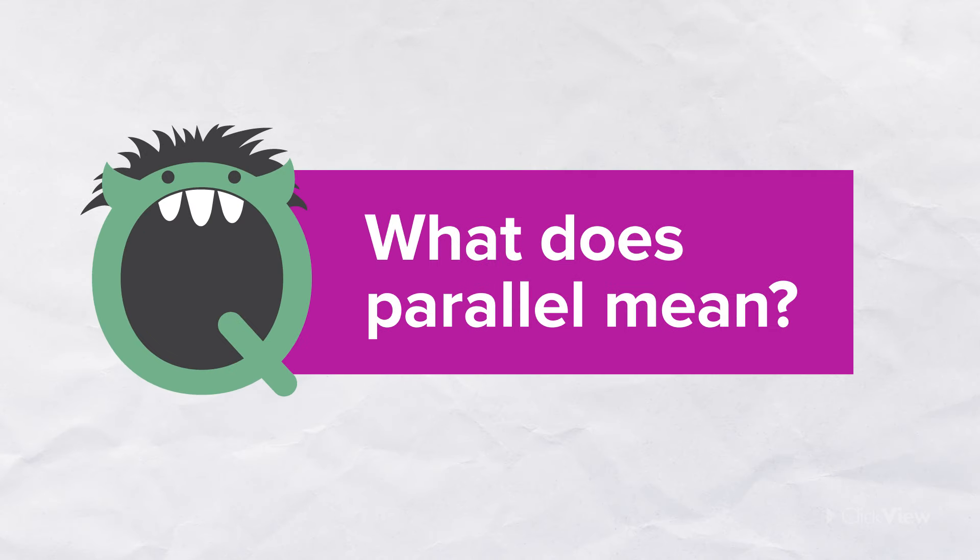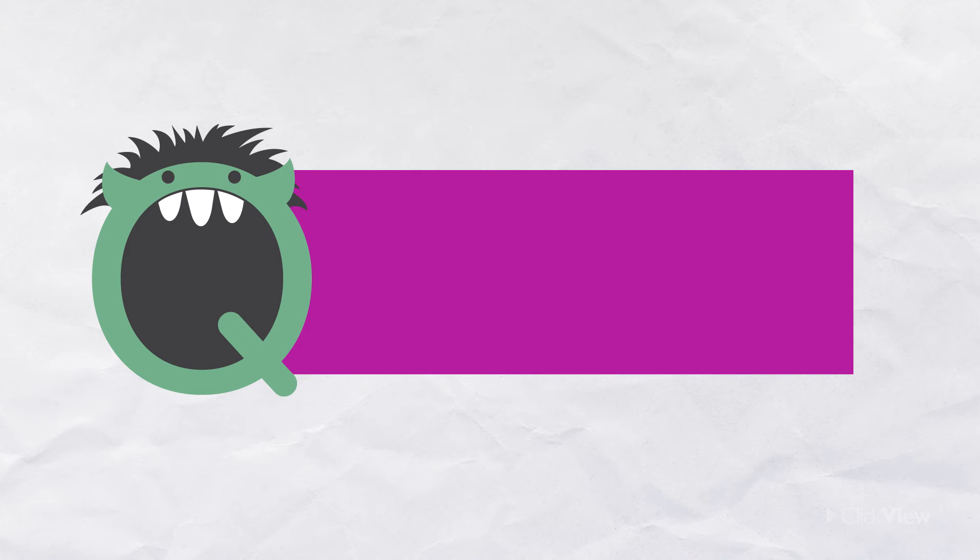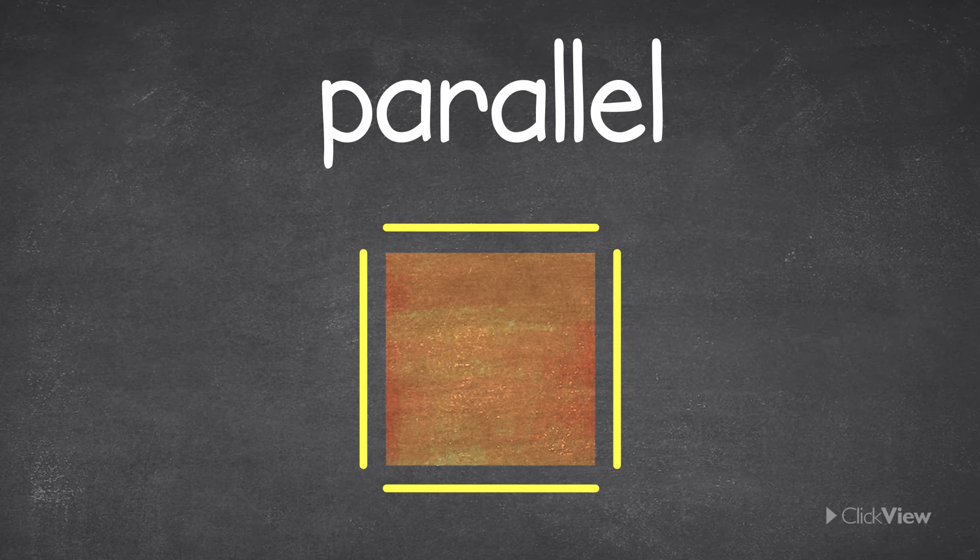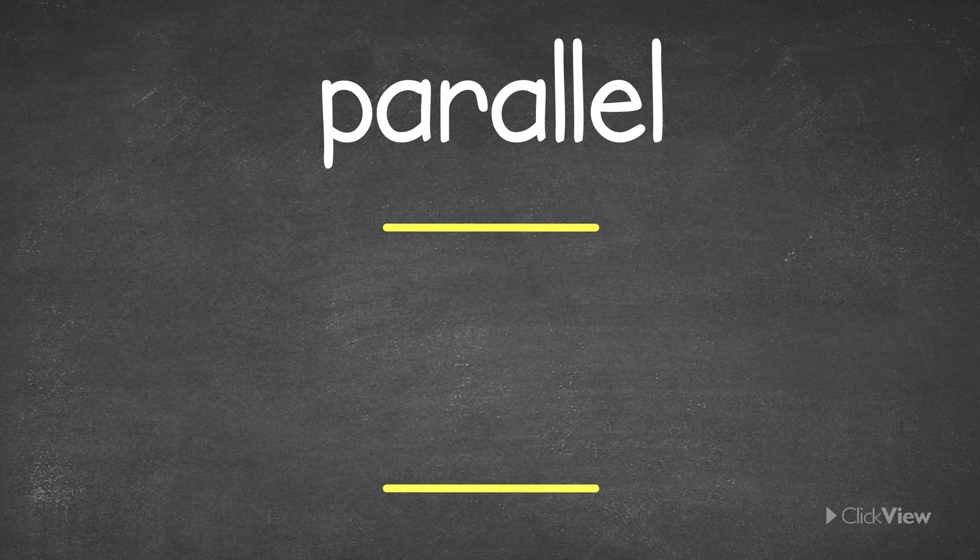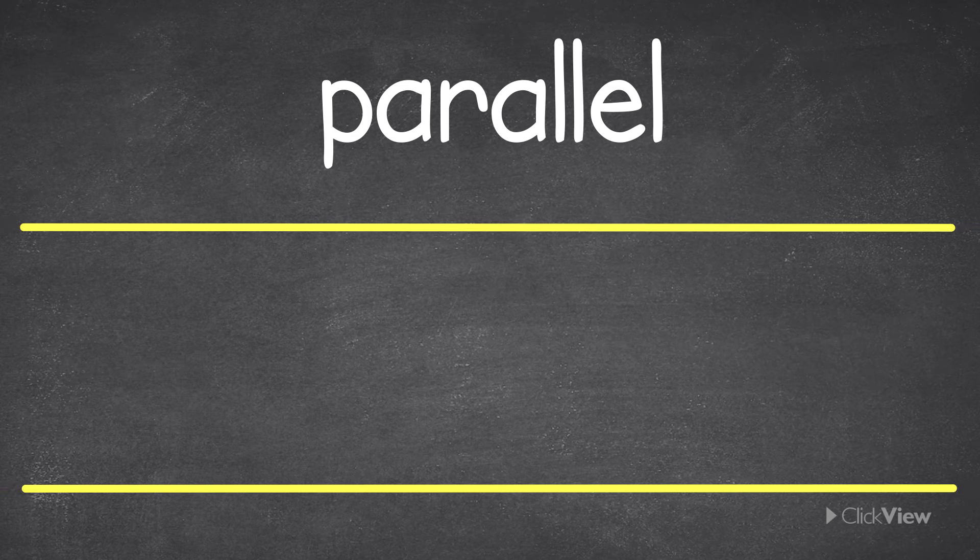What does parallel mean? If two sides are parallel, it means that they are always the same distance from each other and will never touch.